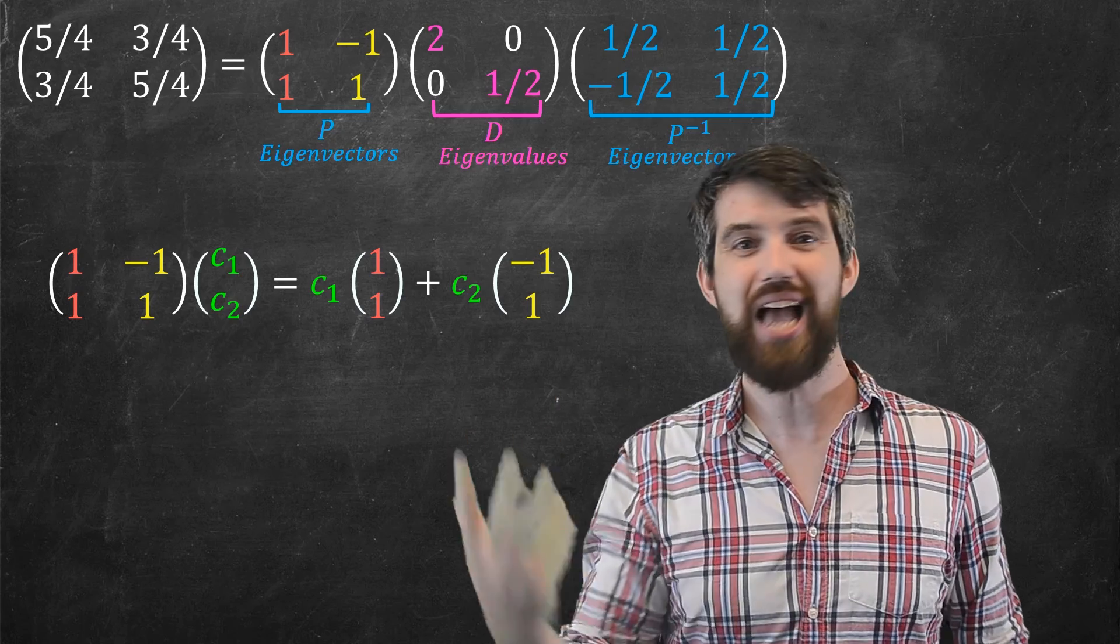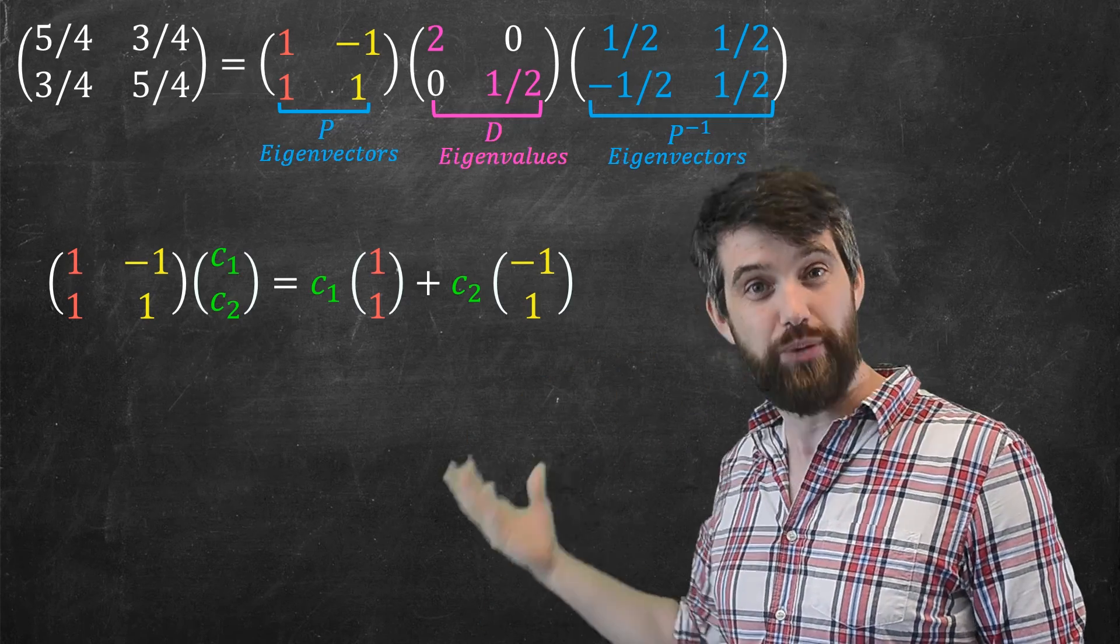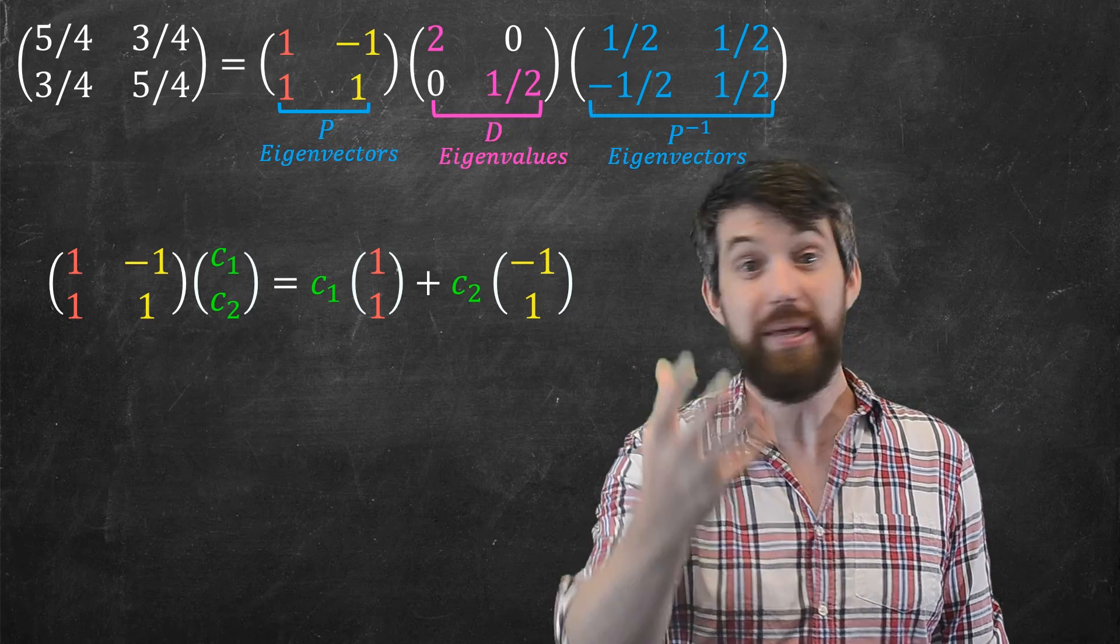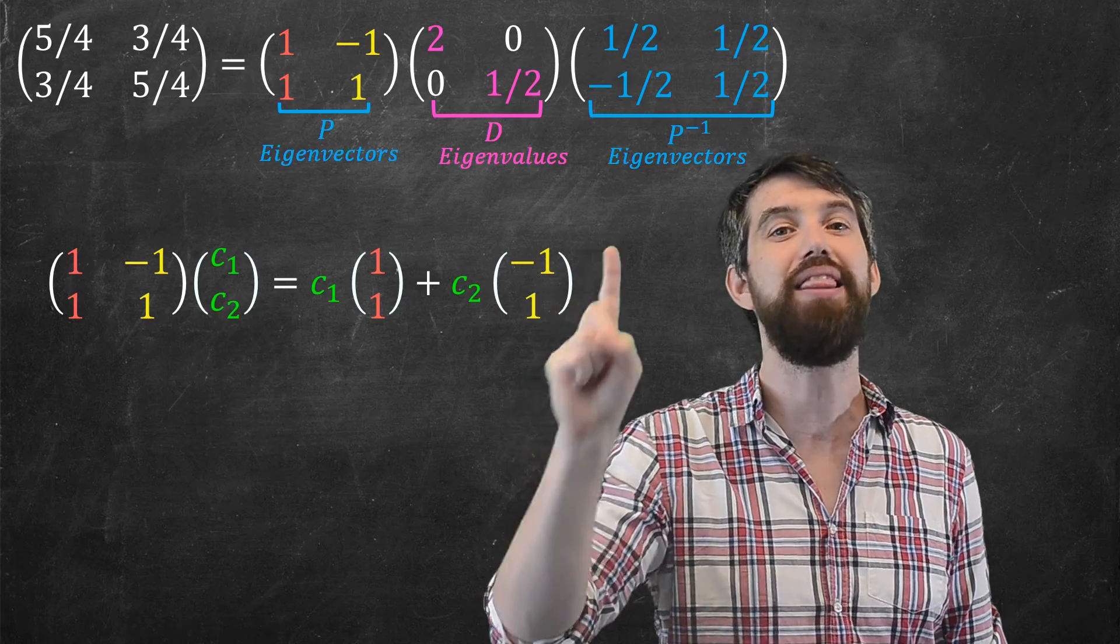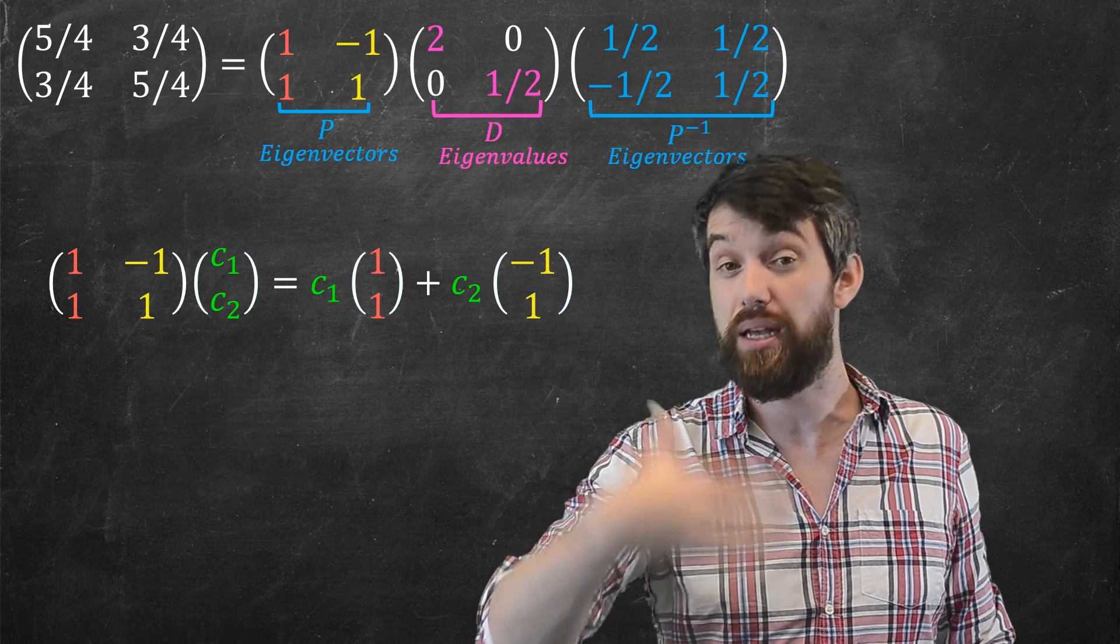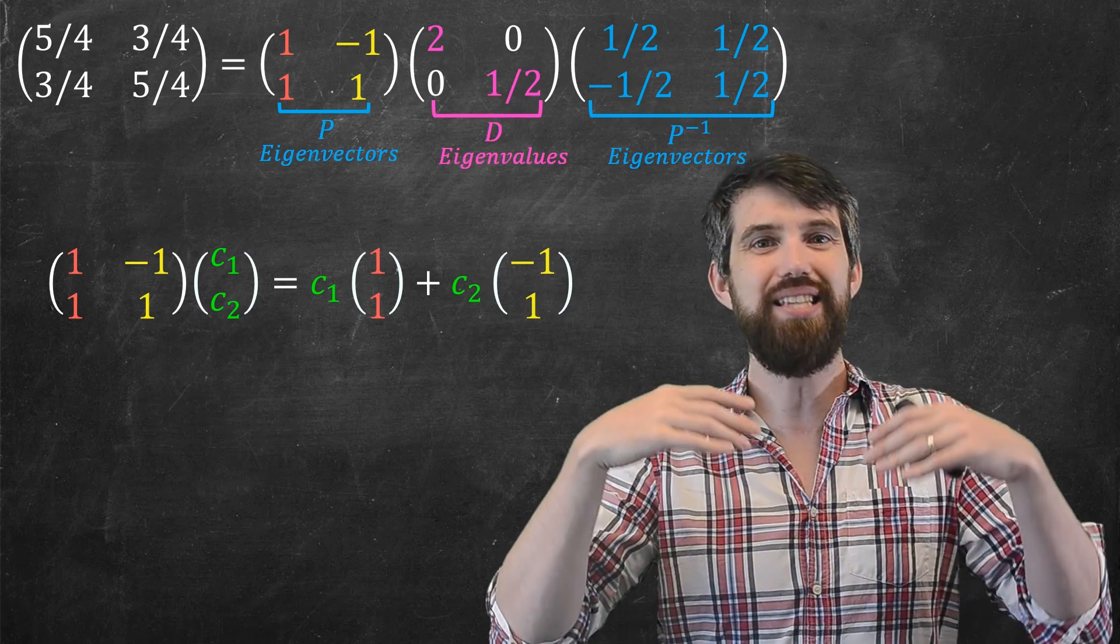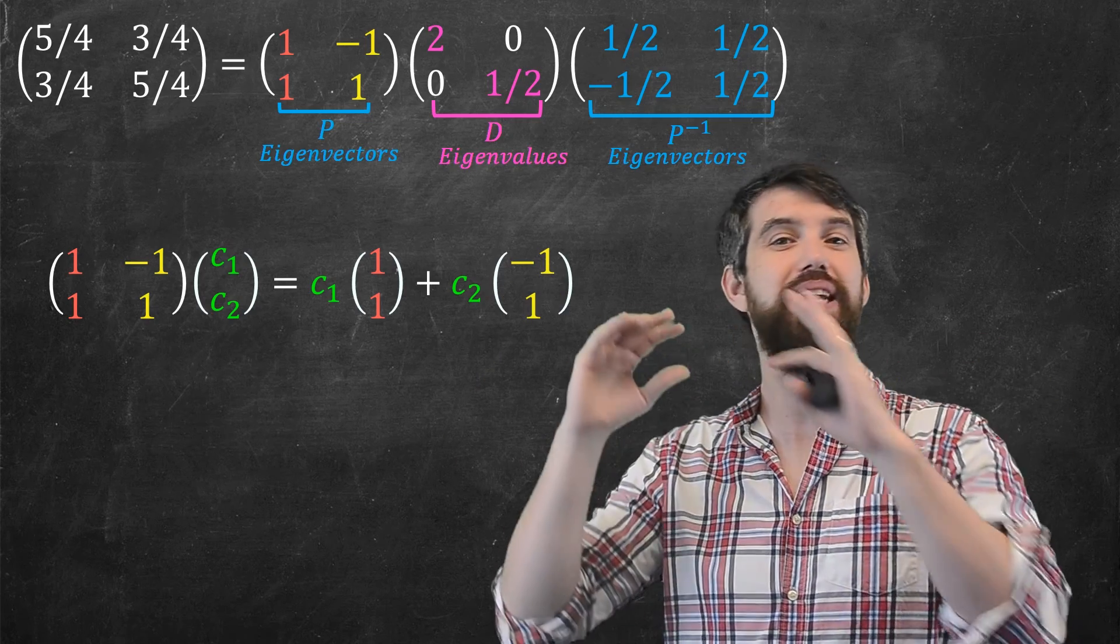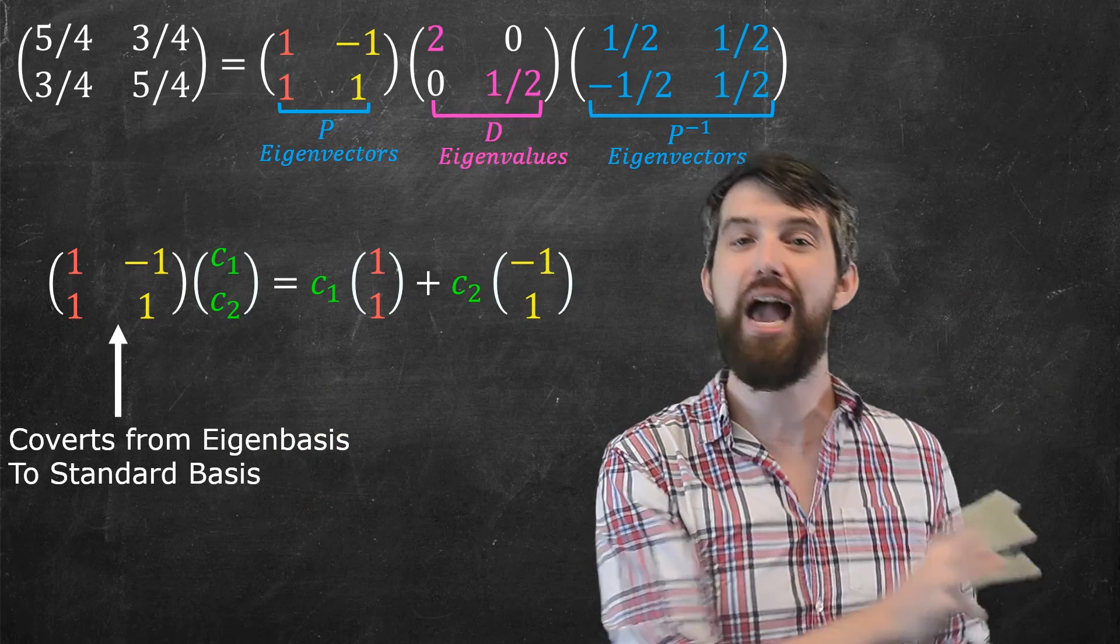So this is the kind of matrix we've seen as a transformation of basis. But what it does when we multiply by this particular P matrix is, it takes a vector c1, c2 that is written in that so-called eigenbasis, a basis of eigenvectors, and it converts it to the standard basis. That is, this is a change of basis matrix that takes vectors that are written in the eigenbasis and writes them into the standard basis.